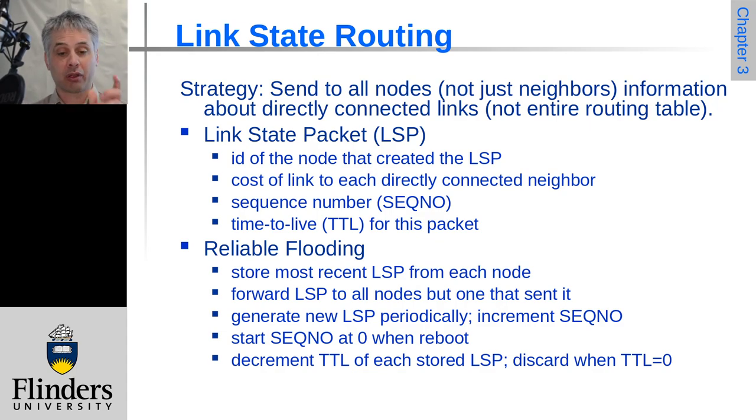It has a sequence number so this can be updated over time as things change, and it has time-to-live information for the packet so that we don't have infinite looping going on, and it uses a reliable flooding algorithm to propagate this information to every node on the network.